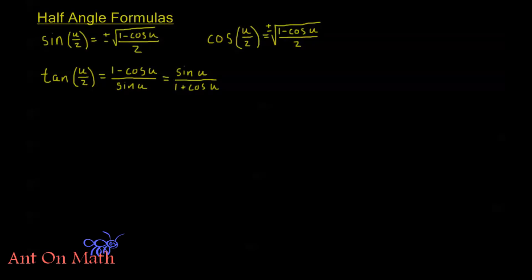Hello and welcome back to Anton Math. In this video we're going to look at a new group of trig identities, which we call the half angle identities or the half angle formulas. They look like this: sine of u over 2 is plus or minus the square root of 1 minus cosine u over 2. Cosine of u over 2 is plus or minus the square root of 1 plus cosine u all over 2. And tangent of u over 2 is 1 minus cosine u over sine u, or sine u over 1 plus cosine u.